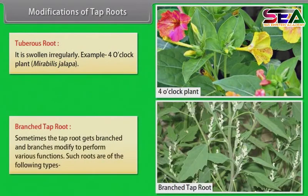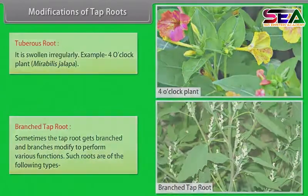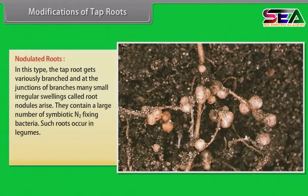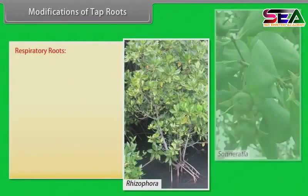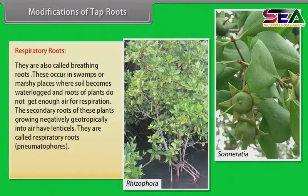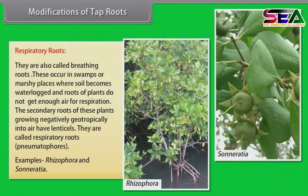Branched tap root. Sometimes the tap root gets branched and branches modify to perform various functions. Nodulated roots: the tap root gets variously branched and at the junction of branches, many small irregular swellings called root nodules arise. They contain a large number of symbiotic nitrogen-fixing bacteria. Such roots occur in legumes. Example: Rhizobium leguminosarum. Respiratory roots: also called breathing roots or pneumatophores. These occur in swamps or marshy places where soil becomes waterlogged and roots do not get enough air for respiration. The secondary roots of these plants grow negatively geotropically into the air and have lenticels. Examples: Rhizophora and Sonneratia.